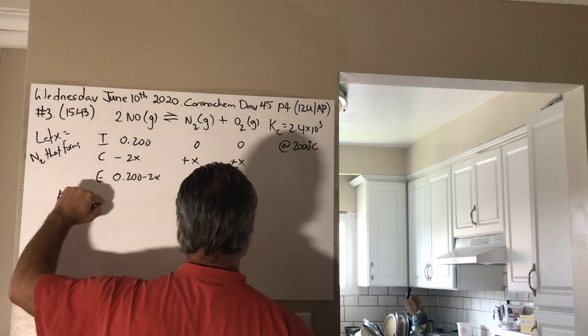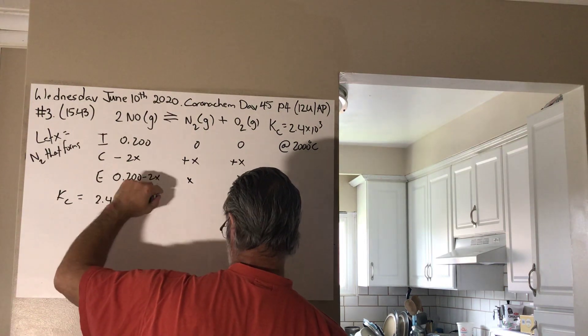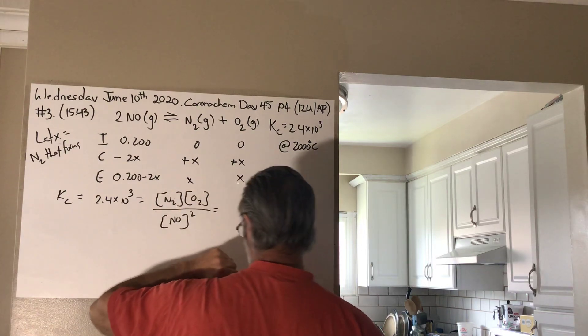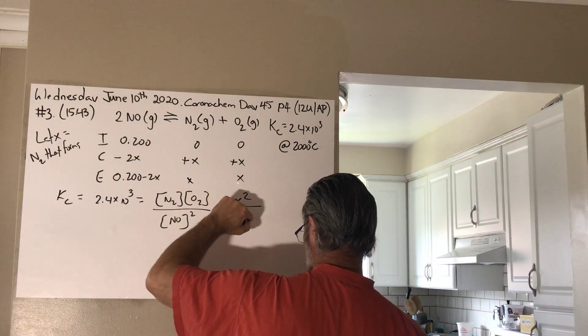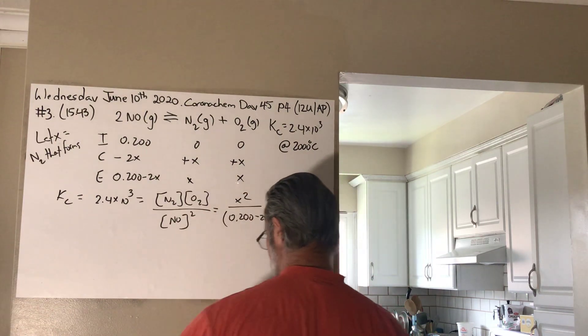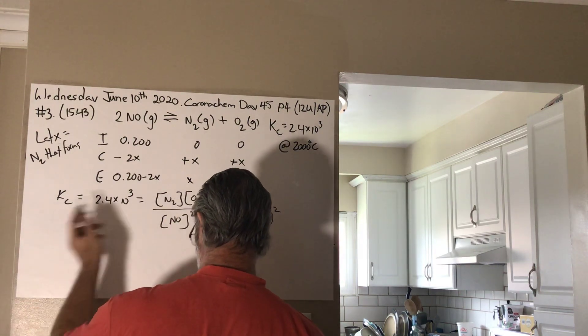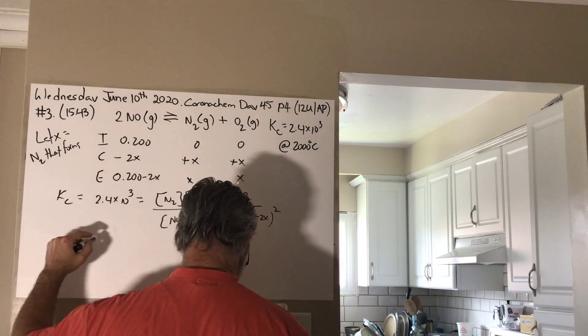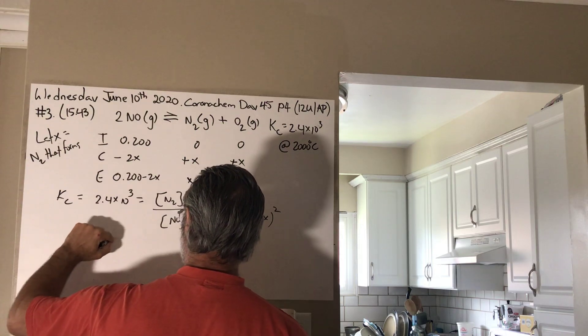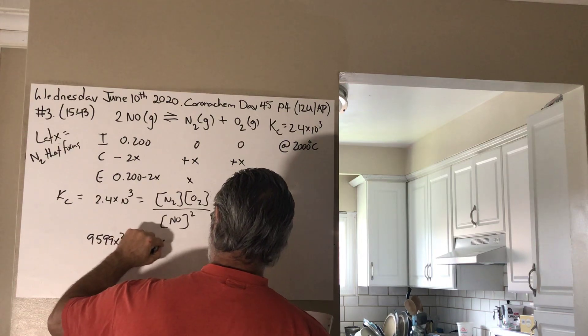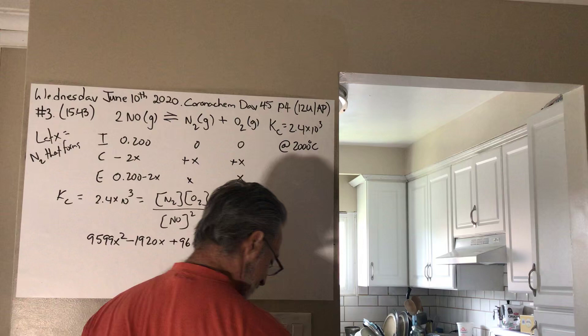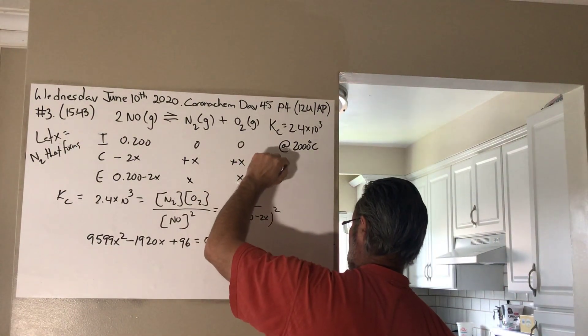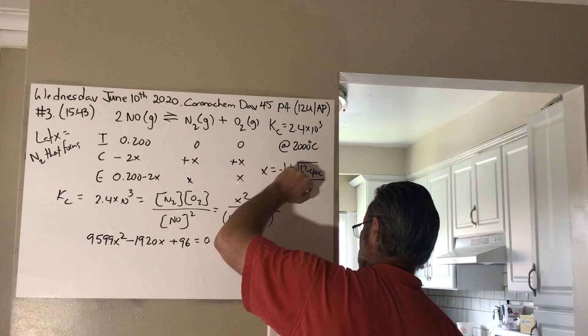So, we all know that the Kc has to equal 2.4 times 10 to the power of 3, and that it is based on concentration of products over concentration of reactants. In this case, we have to square the concentration of the reactants. What we're going to get is X squared over 0.200 minus 2X all squared, which results in a trinomial. What you're going to get is, I'm going to spare you the details of how I get the trinomial, but I just cross-multiplied, and then I simplified, and I set it all to one side, so it equals to 0. What you get at the end is 9599X squared minus 1920X plus 96 equals 0.